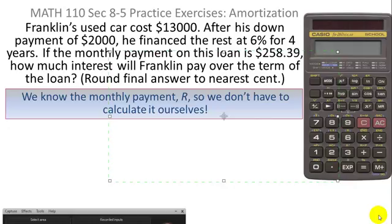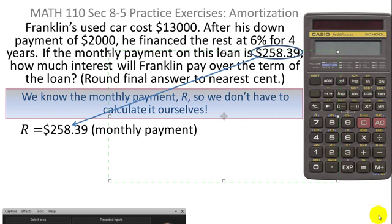So we know here that they've already given us the monthly payment, so we don't have to calculate it. Some of the other problems we've worked, we've had to calculate that monthly payment. But they told us here that the monthly payment was $258.39, so thankfully we don't have to calculate that.